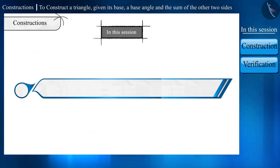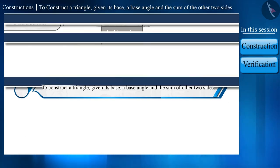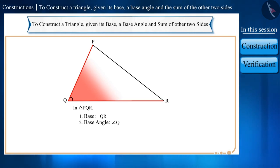In this session, we will learn the construction of a triangle given its base, a base angle, and the sum of the other two sides. As an example, let's construct a triangle PQR. Here, we are given the length of the base QR, the measure of the base angle Q, and the sum of the other two sides, QP plus PR.